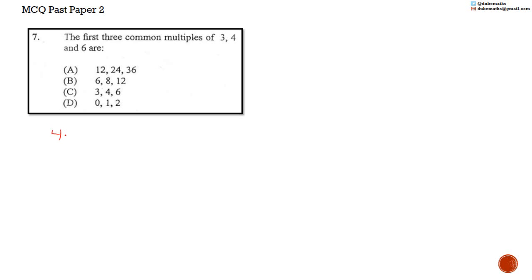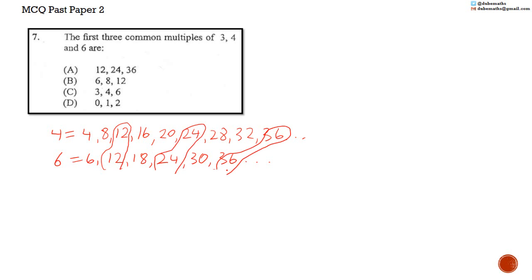So, with this knowledge, we can use 4 and 6 only. The multiples of 4 are 4, 8, 12, 16, 20, 24, 28, 32, 36, and so on. And here we see the common multiples are 12, 24, and 36. And we will arrive at the same answer, A.